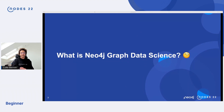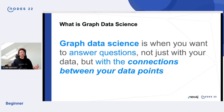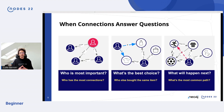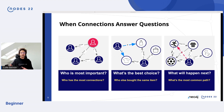What is Neo4j Graph Data Science? Well, first we need to answer: what is Graph Data Science? Graph Data Science is when you want to answer questions not just with your data, but also the connections between your data points. When you have these connections, they allow you to answer new questions like: who is the most important? What's the best choice for someone? Or what might happen next?